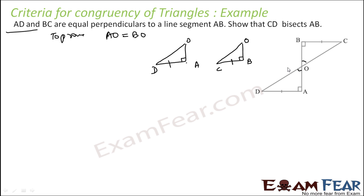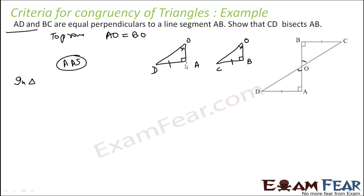If you see, this angle and this angle are equal. Why? They are vertically opposite angles. Now if you see here we have angle, angle, and side. We know that angle-angle-side is a congruency criterion — two angles and one side are equal, meaning they are congruent. So we can prove it.